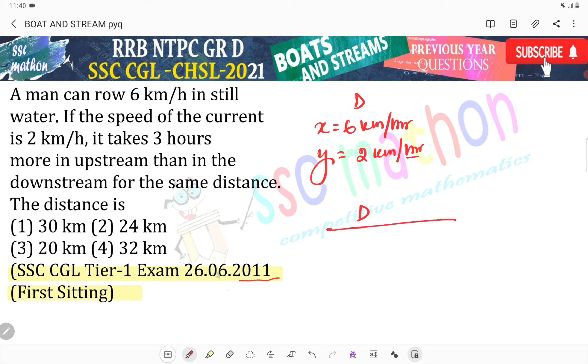How much time to cover this distance? Distance divided by 6 plus 2, meaning D is the distance, distance by speed. Speed in downstream is x plus y. What is upstream speed? x minus y.